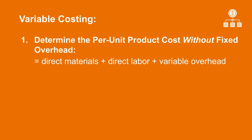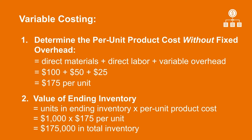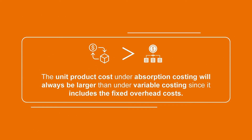However, if we were to use variable costing, we would calculate the per unit product cost in a similar way, but we need to make sure not to include the fixed overhead. In this case, the per unit product cost would be $100 in direct materials plus $50 in direct labor plus $25 in variable overhead, giving us $175 per unit. Ending inventory equals units in ending inventory times the per unit product cost, so multiplying $175 per unit times 1,000 units gives us $175,000 in total inventory value. As you can see, the unit product costs under absorption costing will always be larger than under variable costing since it includes the fixed overhead costs.